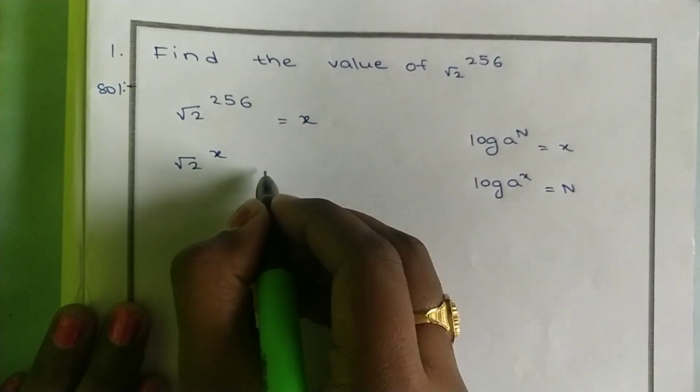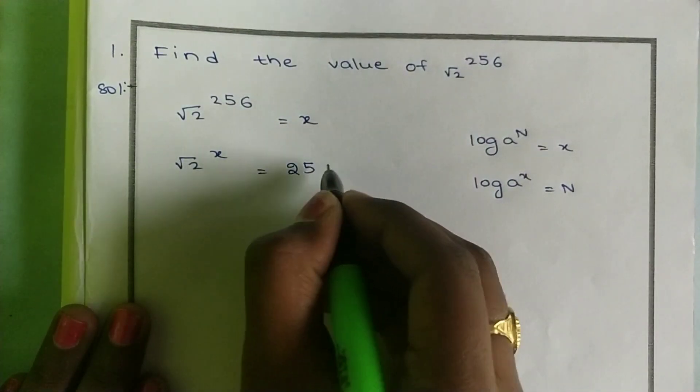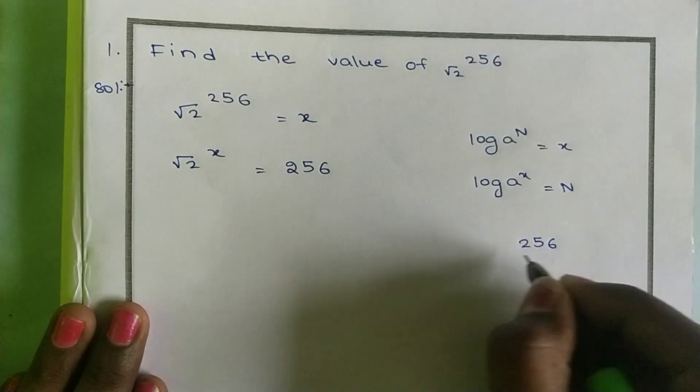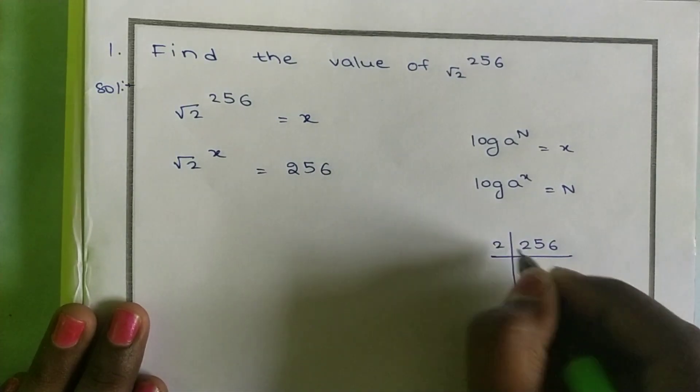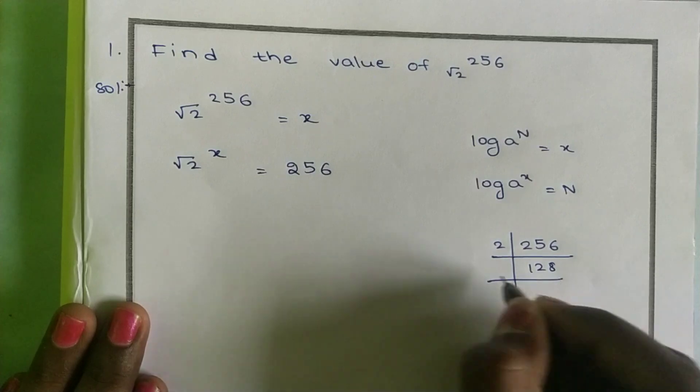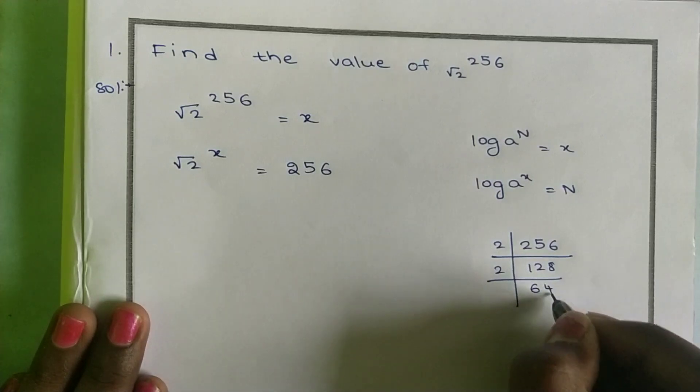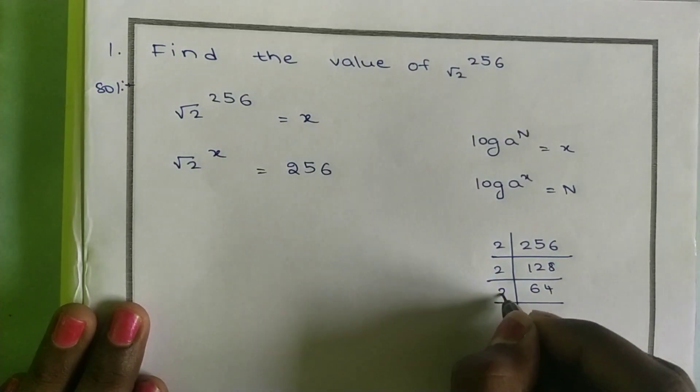By using the formula log a to the power n equals x and log a to the power x equals n, we get root 2 to the power x equals 256. Now let us find the factors of 256.